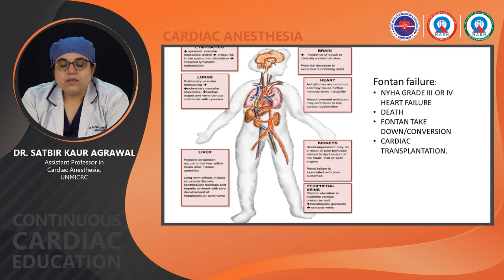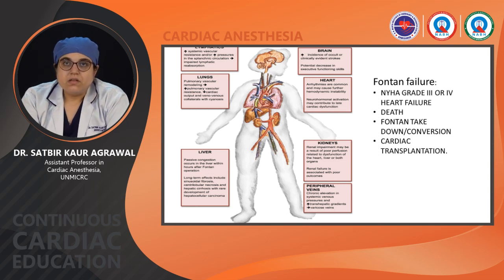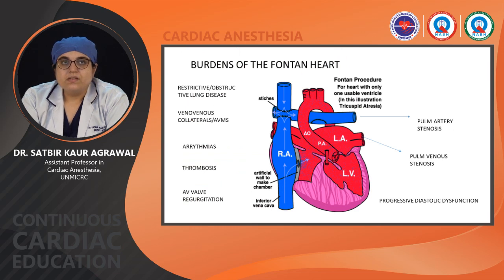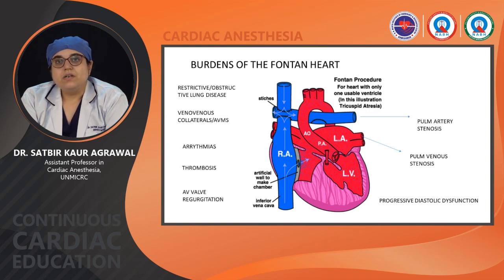Fontan failure is the stage when there is NYHA grade 3 or 4 heart failure and the patient deteriorates — with either death, Fontan take-down, or conversion — and the only solution is cardiac transplantation. Burdens on the Fontan heart include restrictive or obstructive lung disease, veno-venous collaterals or AVMs, arrhythmias, thrombosis, AV valve regurgitation, pulmonary artery stenosis, pulmonary venous stenosis, and progressive diastolic and systolic dysfunction.